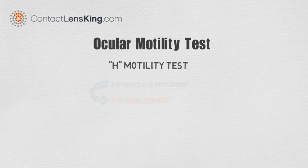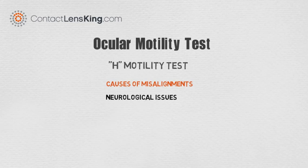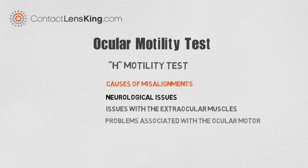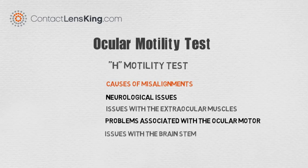Causes of a misalignment can stem from neurological issues, issues with the extra-ocular muscles, problems associated with the ocular motor, or issues with the brain stem, just to name a few.